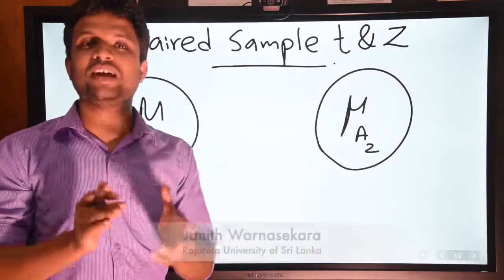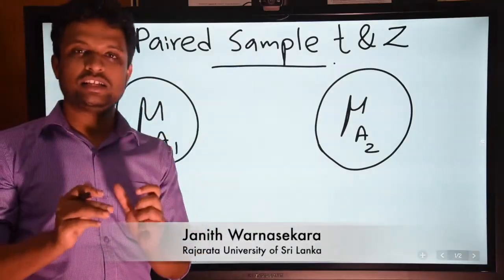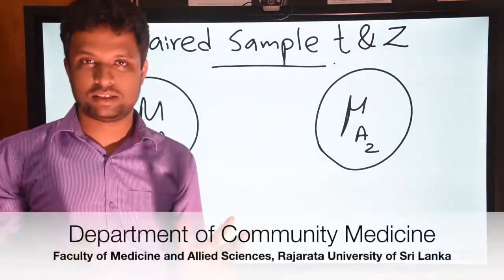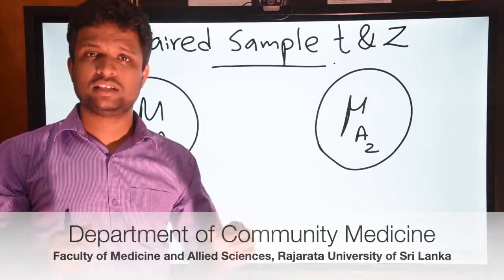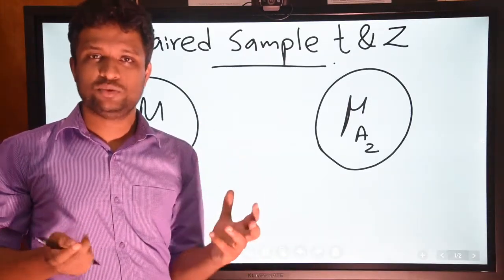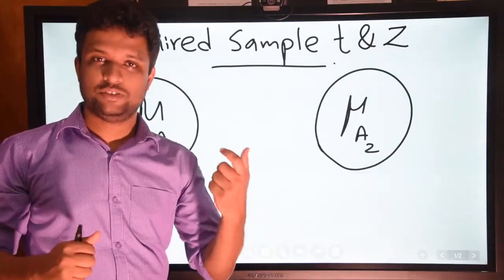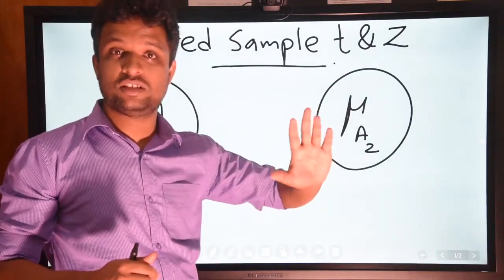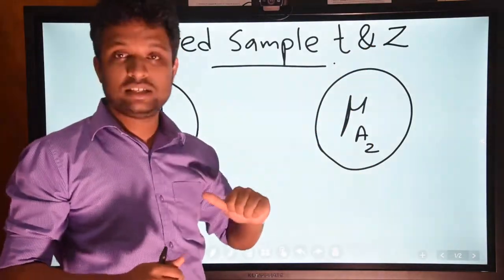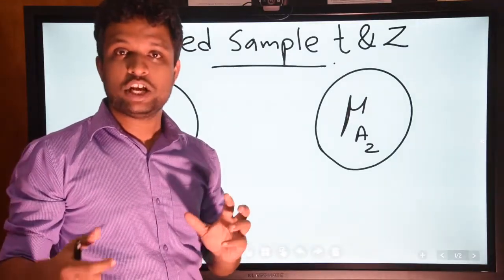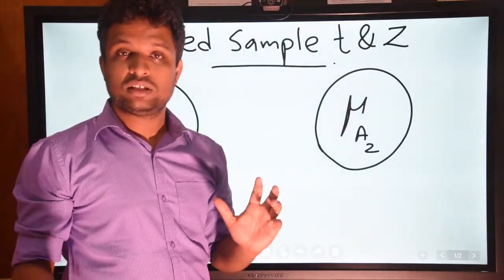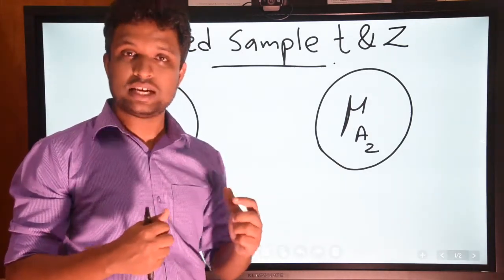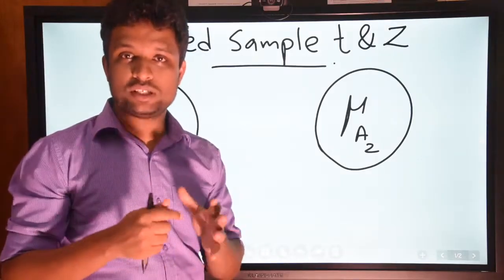Welcome to the lecture on paired sample tests. In this lecture we are going to discuss paired sample t-test and paired sample z-test. For both tests we use an almost similar formula, but the difference is: in z-test we assume the population standard deviation is known, and t-test is used especially for small samples where we don't know or can't estimate the population standard deviation.